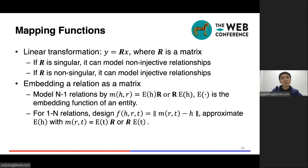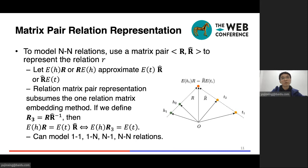To solve the problem, let's consider the linear transformation Y equals R times X. If R is singular, it can model non-injective relationships. If R is non-singular, it can model injective relationships. So we embed a relation as a matrix. For n-to-one relations, we design M(H)R as linear transformation of head entities. For one-to-n relations, we design M(R)T as linear transformation of tail entities. The score function is the distance between the head embeddings and M(R)T. To model n-to-n relations, we combine the approach and use a matrix pair R and R_head. We let the linear transformation of head entity approximate the linear transformation of tail entities. This subsumes the one-injective matrix method.